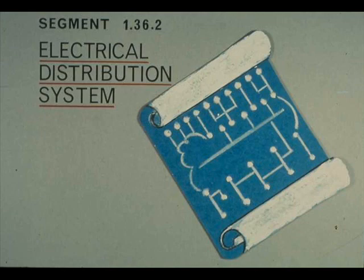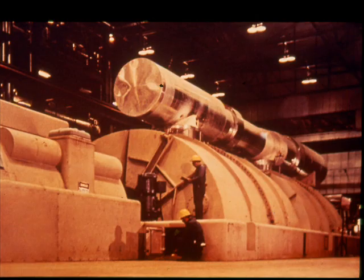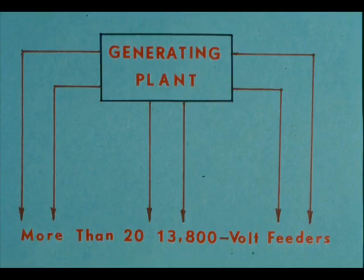For greatest efficiency in your operation of electrical equipment, you must know the electrical distribution system of your refinery or plant. Some industrial plants generate all or part of the electricity they use; others buy it from a utility company. In either case, there is at least one relatively high voltage feeder line from the generating plant or from a power transmission line. The number of feeders and the voltage they carry depend on your plant's needs. In one large refinery, more than 20 feeders carry 13,800 volts to various parts of the plant.